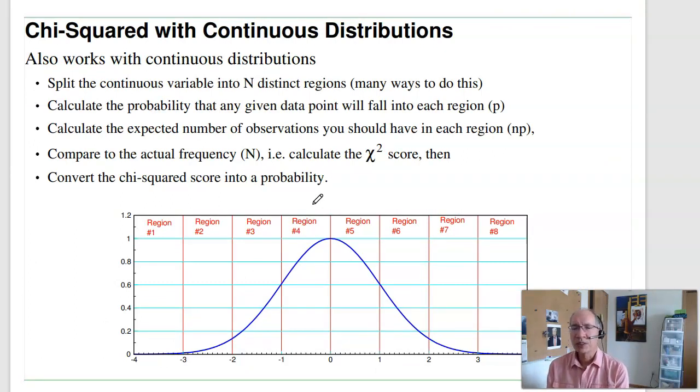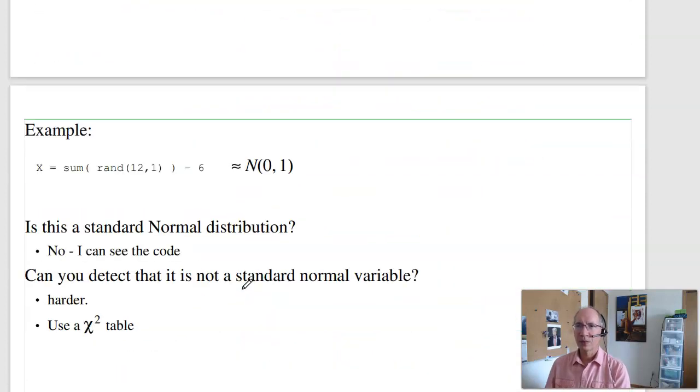Chi-squared also works with continuous distributions. With a continuous distribution, what you do is, again, you split the data into bins. In this case, if I have a normal distribution, I'll split it up into eight regions. Here's three standard deviations left, three standard deviations right, between two and three, one and two, and so on. There's my eight regions. Next, I'll collect a bunch of data, then see how many times the data falls into each region. I'll then compare the frequency the data falls into each region, compared to the expected frequency, the probability times the sample size, your n times p. Calculate the chi-squared score, and then convert back to a probability.